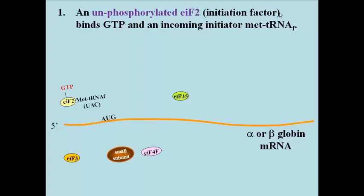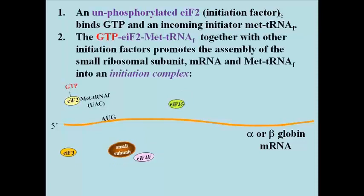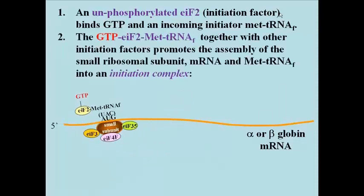First, EIF2 binds GTP and an initiator methionine tRNA. Then EIF2 and several other eukaryotic initiation factors deliver the initiator methionine tRNA to the messenger RNA during the assembly of the initiation complex.